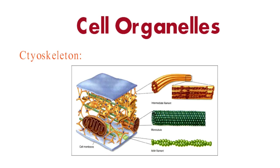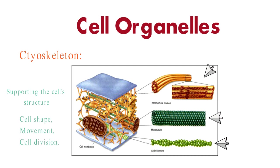The cytoskeleton supports the cell's structure and provides a scaffold for its organelles. This intricate network of protein filaments consists of microtubules, microfilaments, and intermediate filaments. The cytoskeleton is responsible for cell shape, movement, and even cell division.